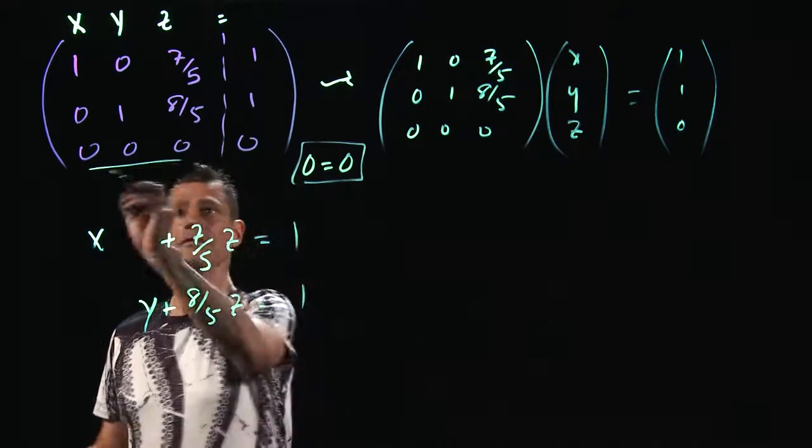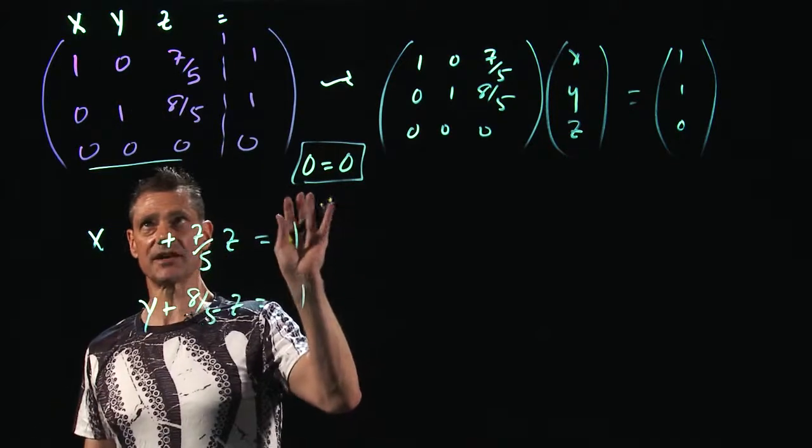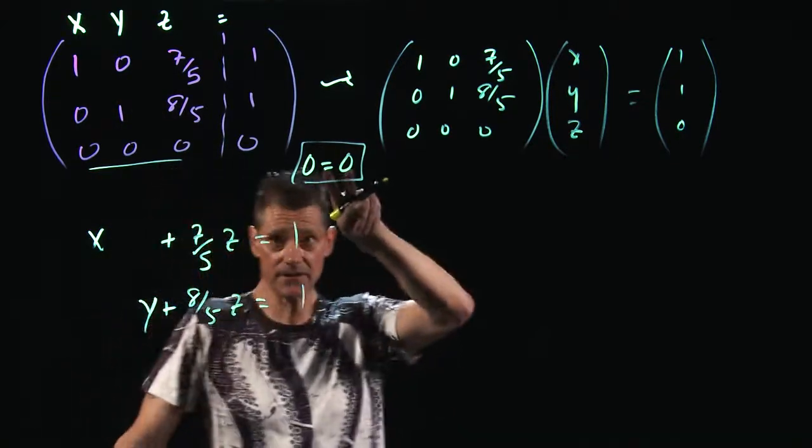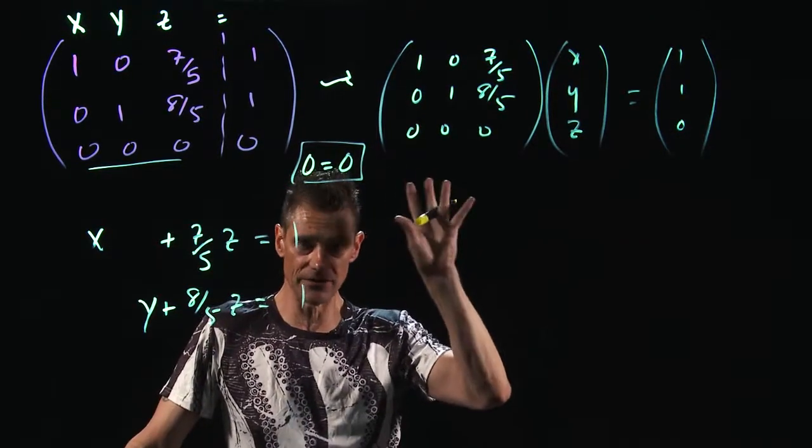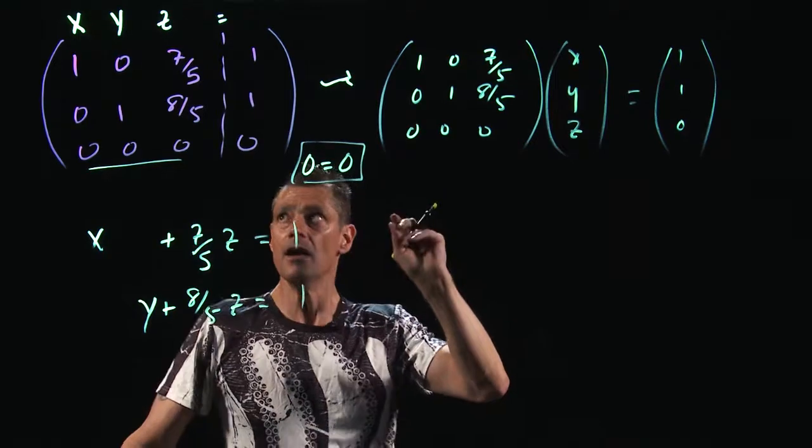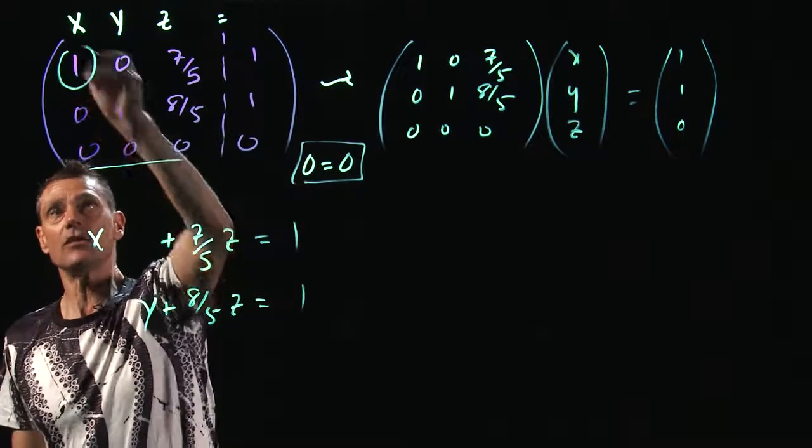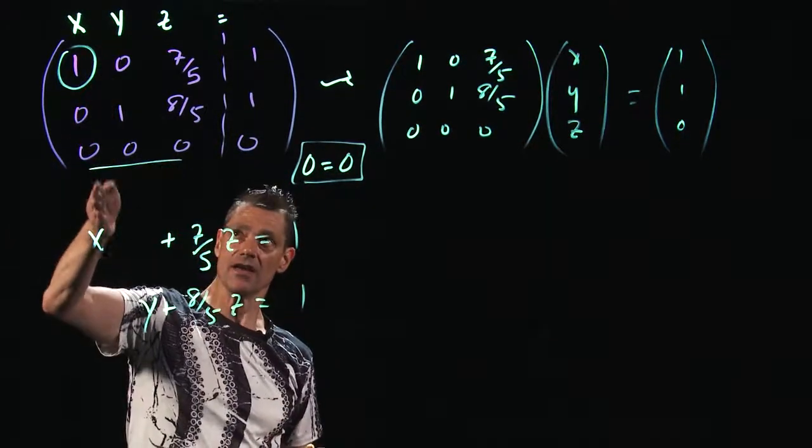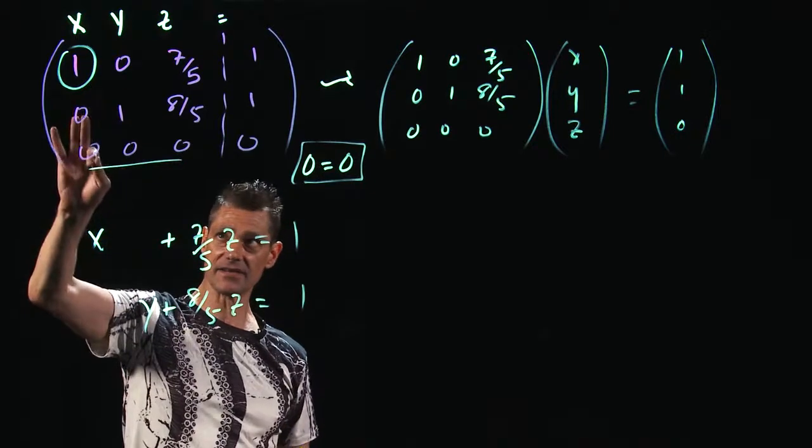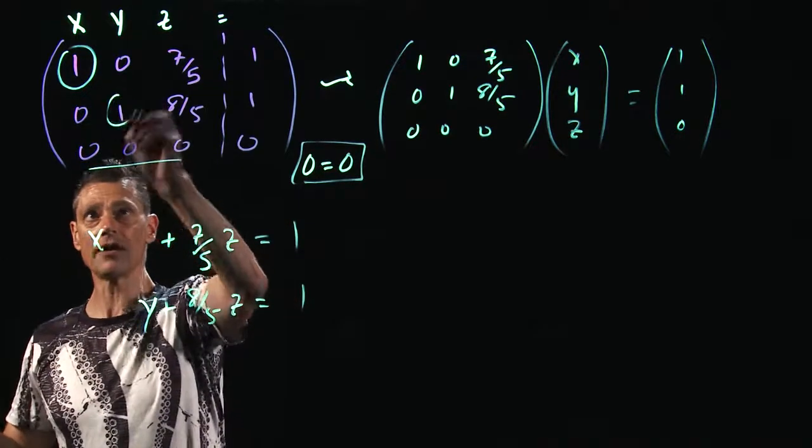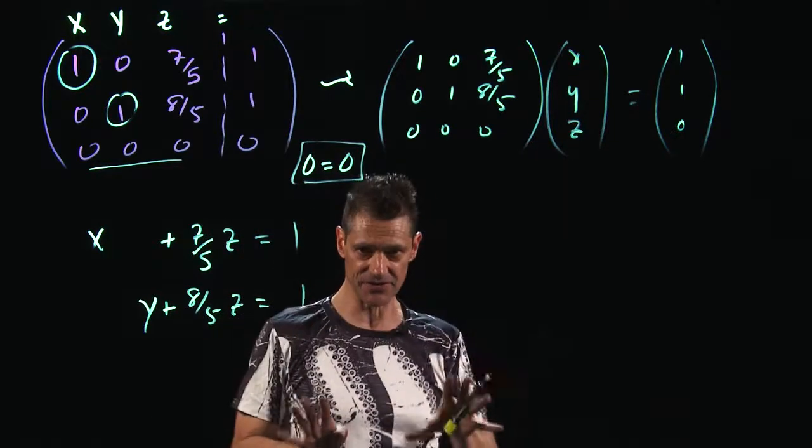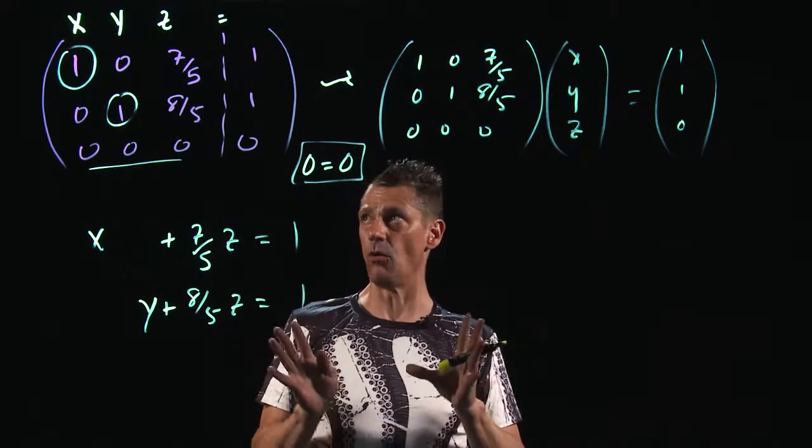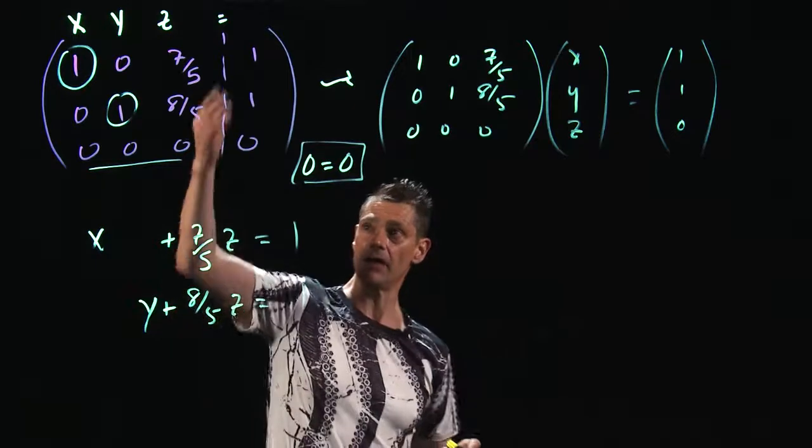Let me back up just a second. What this means is that the matrix is consistent. If you would have had, like, 1 equals 0, then it would have been inconsistent. But here, this lead 1 in the x column says x is real. It exists. The lead 1 in the y column says y is real. And I mean, it shows up. It matters in the order of operations. It exists.